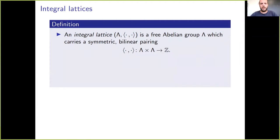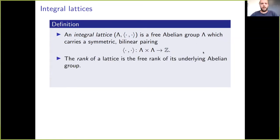As a definition, an integral lattice is a free abelian group lambda — so as a group isomorphic to Z^n for some n — but additionally it carries a symmetric bilinear pairing that takes values in the integers. The rank of a lattice is just the free rank of its underlying abelian group.